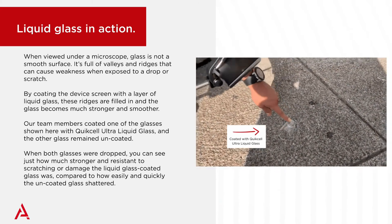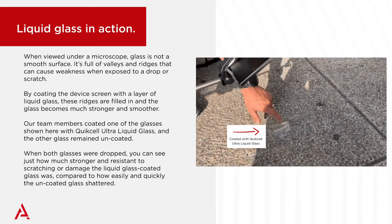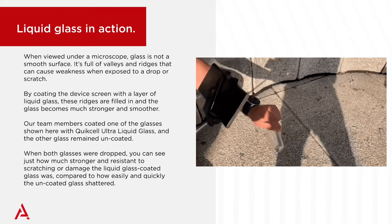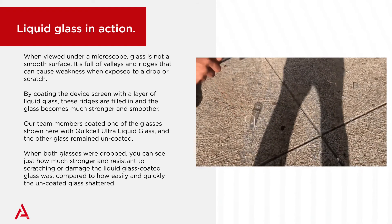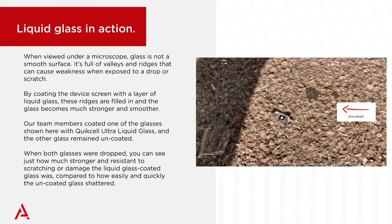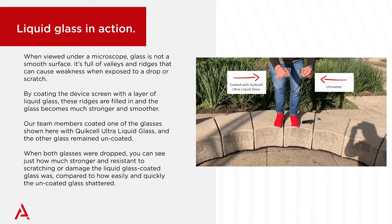When viewed under a microscope, glass is not a smooth surface. It's actually full of valleys and ridges, which can become points of weakness when exposed to external stress, like a drop or a scratch. By coating the device screen with a layer of liquid glass, these ridges are filled in, and the glass becomes much stronger and smoother.